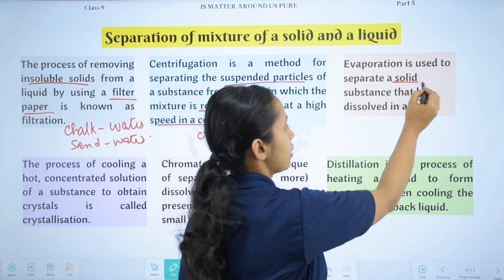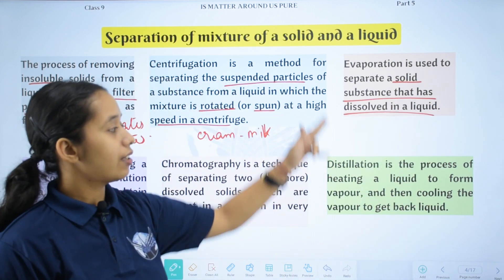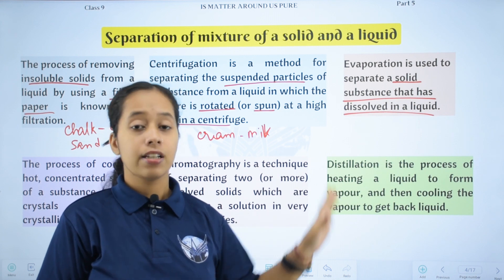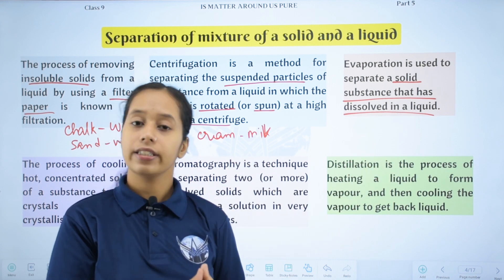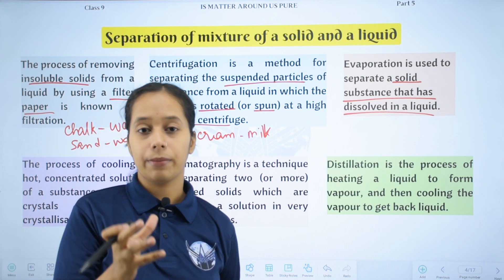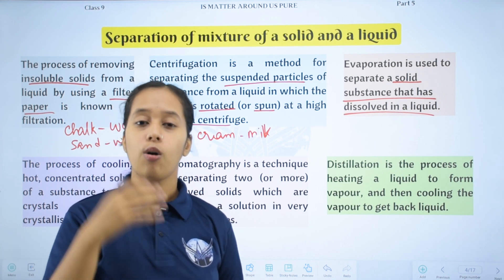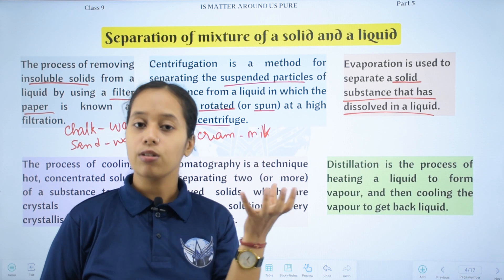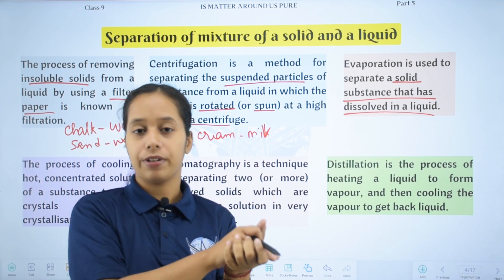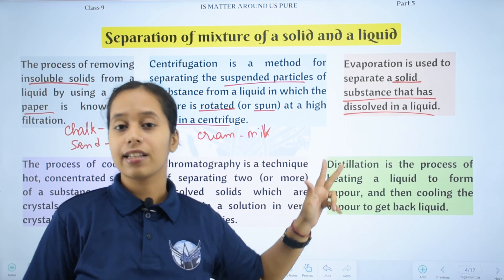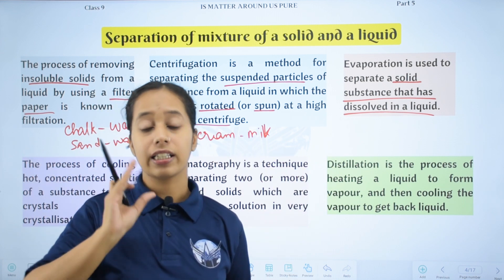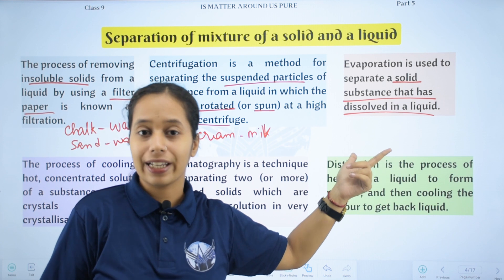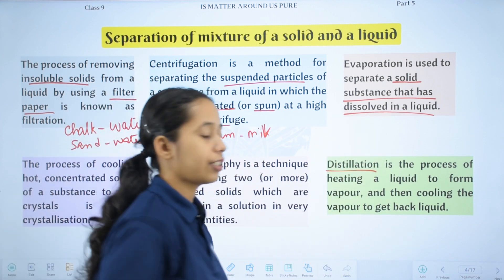Evaporation is used to separate solid substances that have dissolved in a liquid. In this process, we heat the mixture, all the liquid evaporates, and we get the solid. This method has a disadvantage: the liquid gets completely lost. So when we need to collect both the solute and the liquid, we go for the process of distillation.